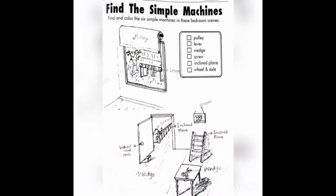Now open page number 60. As you know about the six simple machines, you have to find out the six simple machines in these bedroom scenes and write them on this page. I hope you understand the topic and all the work. Goodbye.